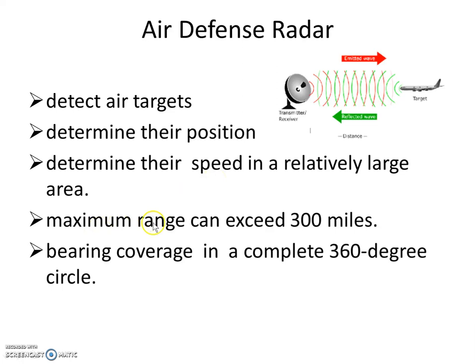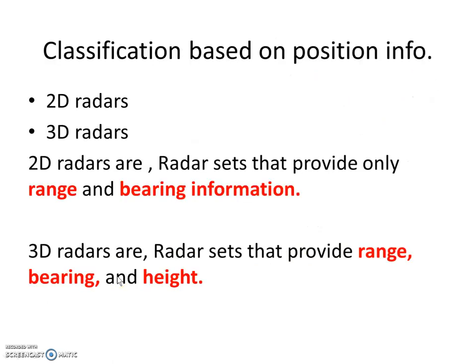The maximum range of the air defense radar exceeds 300 miles, which is nearly equal to 400 kilometers. Bearing coverage is a complete 360 degrees, meaning we can detect targets at all angles.